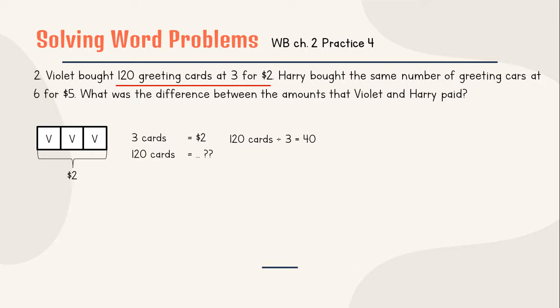So if 3 cards equals 2, 120 cards will be divided by 3 and we will have 40. Get it? It means that we will have 40 packets, not $40. So how many dollars? 40 times $2 equals $80. You said I'm really confused with what is this 40 about? It means that this is one packet. This can be imagined as one packet. So 40 here is 40 packets. 40 packets like this that contains 3. So Violet will pay $80. Violet paid $80. So that's it.